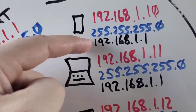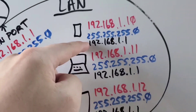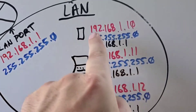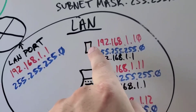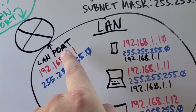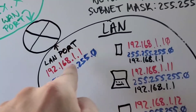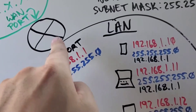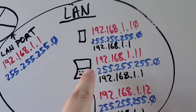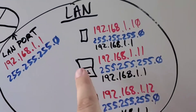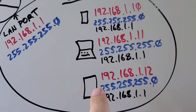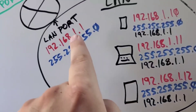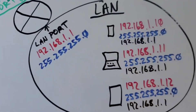The default gateway tells each device how to get outside of this network. So the phone knows it needs to go to 192.168.1.1 to get outside of the network, to get to the internet. The laptop also knows that's where it needs to go, and this phone also knows it needs to go there to get outside of the network. Those are the three settings used to configure a network interface on a device.